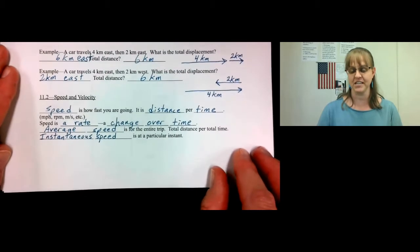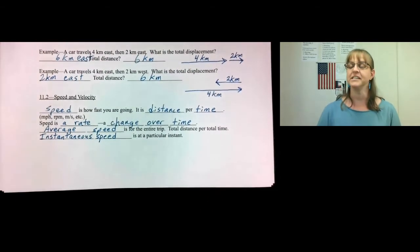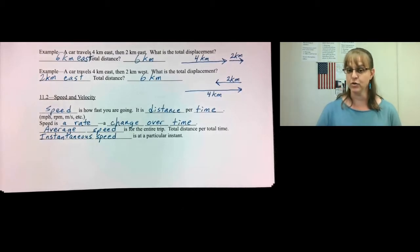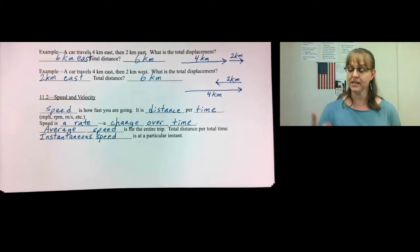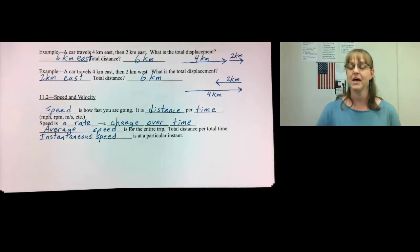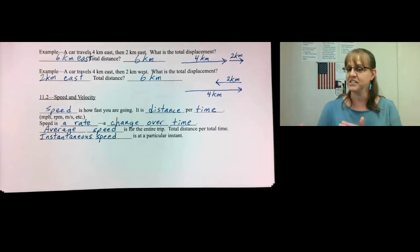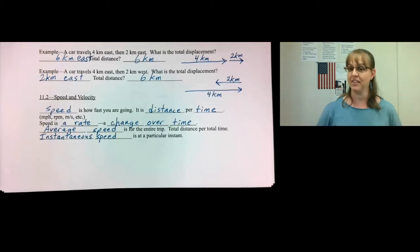Next, let's talk about speed and velocity. Speed is how fast you're going — it's distance divided by time. For example, miles per hour is a unit for speed: miles are a distance and hours are the time. Rotations per minute — like how fast something is spinning — rotations are like the distance and the minute is the time. Meters per second: meters are the distance, seconds are the time. Speed is a rate — a rate is a change over time. Speed is how your position changes over time.